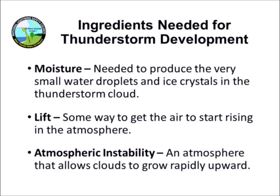There are three main ingredients needed for thunderstorm development. They are moisture, lift, and atmospheric instability. The moisture produces the small water droplets and ice crystals in the thunderstorm cloud. The lift causes air to rise and form clouds, and instability allows the storm cloud to rise rapidly in the atmosphere.